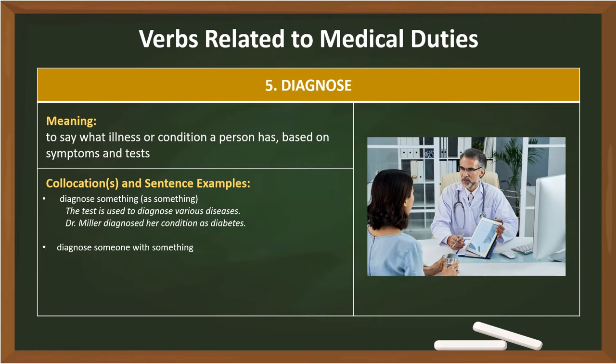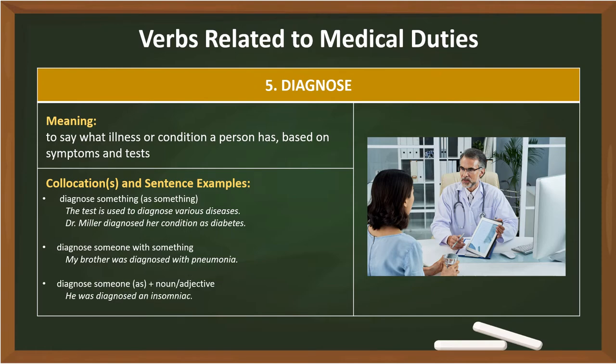Diagnose someone with something — My brother was diagnosed with pneumonia. Diagnose someone as + noun or adjective — He was diagnosed an insomniac. The patient was diagnosed as dyslexic.